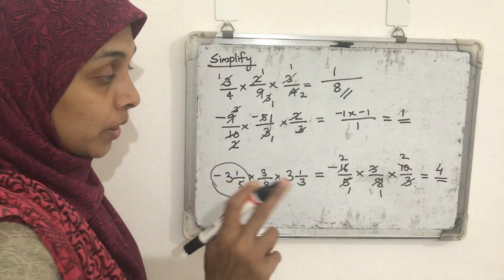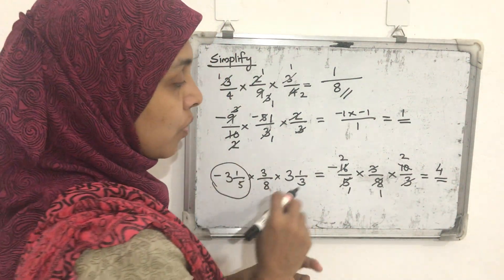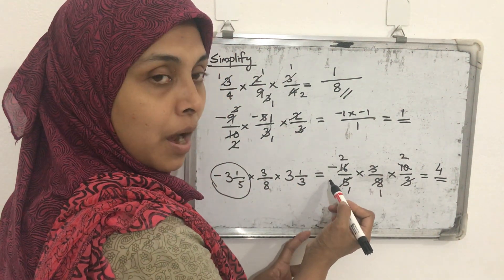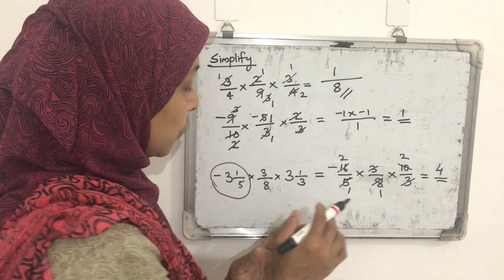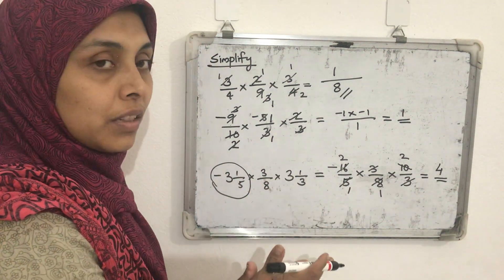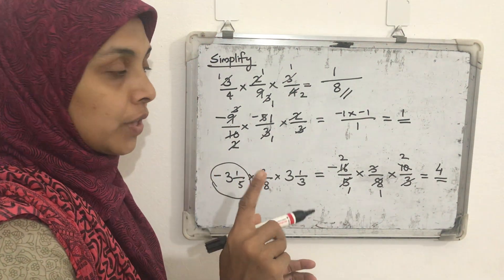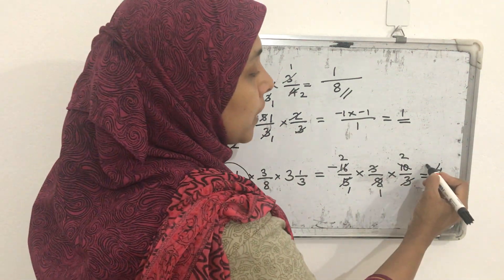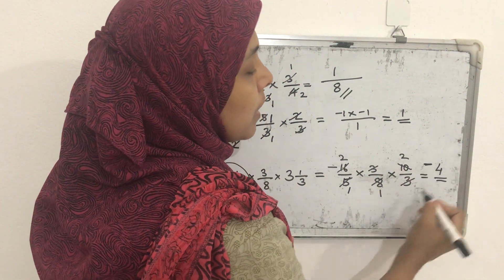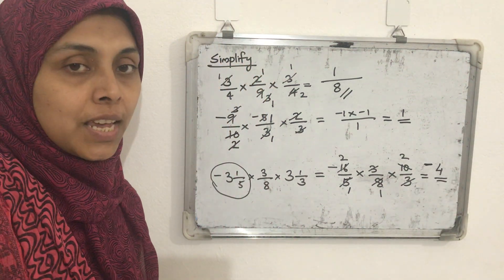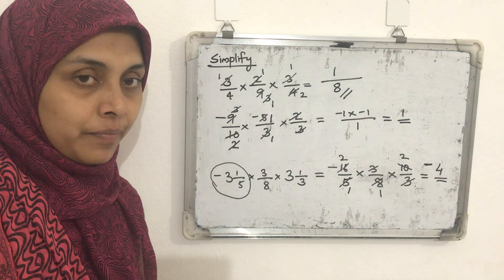One more thing: check the sign. There is only 1 negative among the factors, which is an odd count, so the product is negative. Therefore the answer is −4.